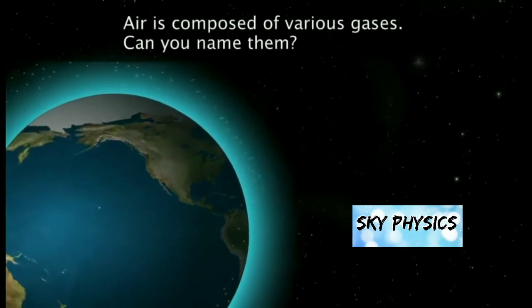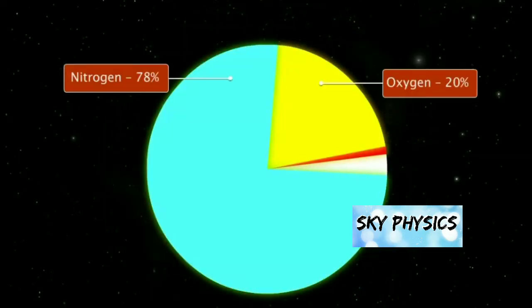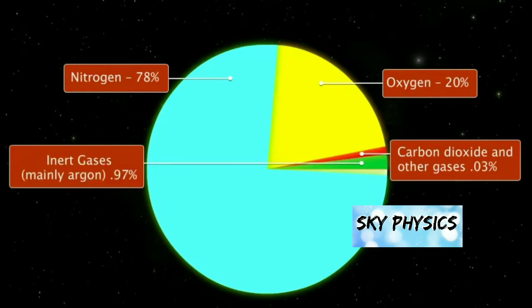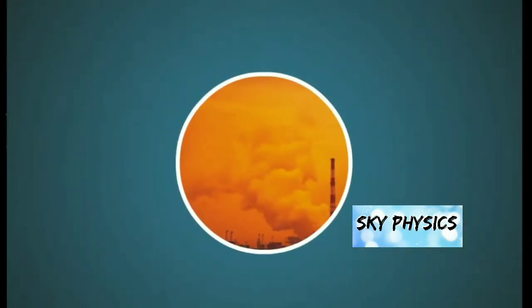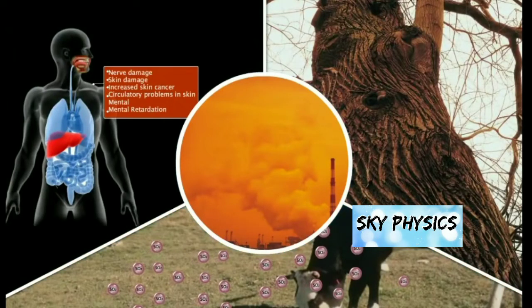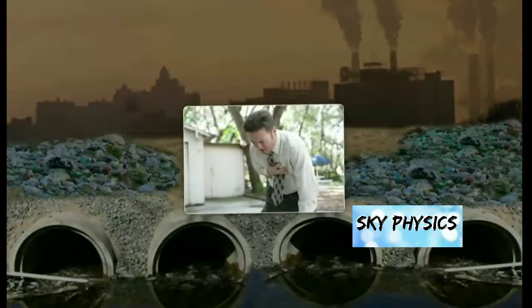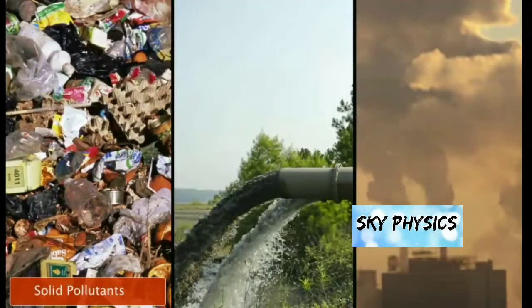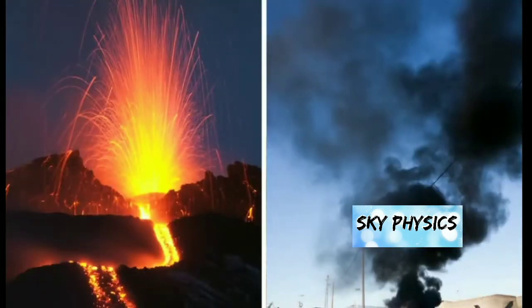Let's look at the types of air pollutants. Air is composed of various gases — can you name them? Nitrogen, oxygen, carbon dioxide, and other inert gases, mainly argon, make up about 97%, and water vapor is basically 1%. When harmful gases mix with the air, it becomes very harmful for humans, plants, and animals. The main pollutant factors include solid pollutants, liquid pollutants, and gaseous pollutants.